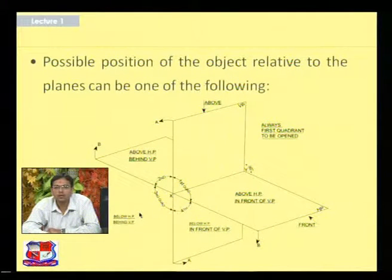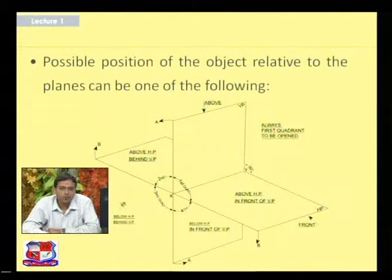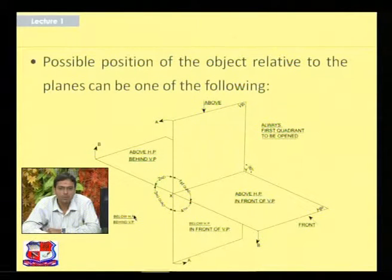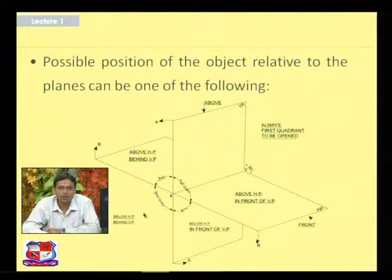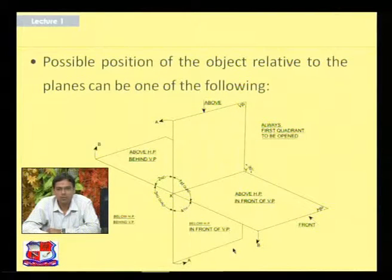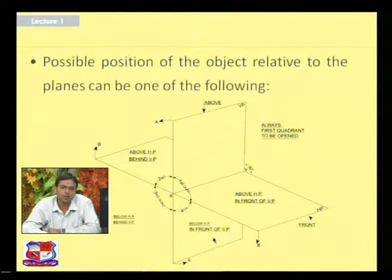Consider the position of the object in the third quadrant, using the two planes: horizontal and vertical. The object kept in the third quadrant is below the horizontal plane and behind the vertical plane. In the fourth quadrant, the object is below the horizontal plane and in front of the vertical plane.